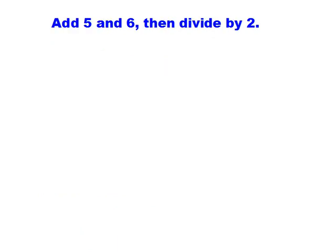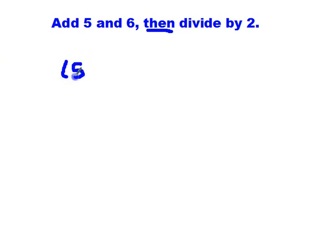Here's one for you to try in your notebook: add 5 and 6, then divide by 2. You should have in your notebook: we're going to add 5 and 6 — 'then' is a key word right there — divide by 2. So the first job is to add 5 and 6, and then we're going to divide that by 2.